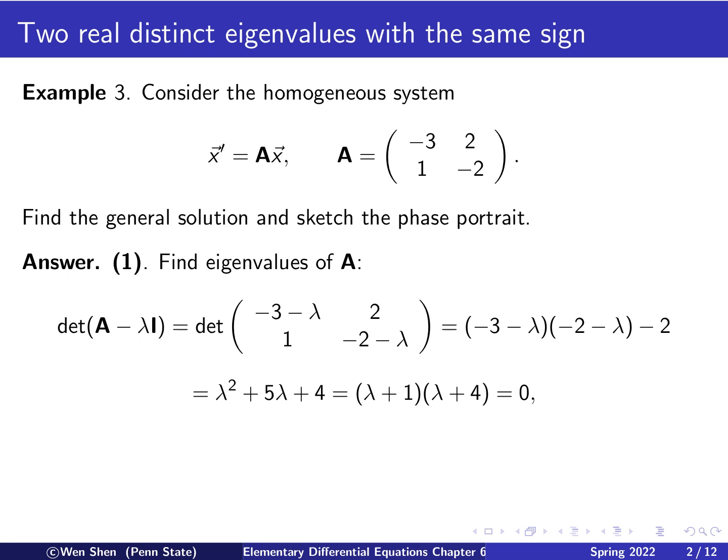The first step is to find the eigenvalues of A. One forms the characteristic polynomial, that is, the determinant of A minus lambda I. I is identity, lambda is the eigenvalue. For the A matrix, subtract lambda on the diagonal. The determinant is the product of the two diagonal entries minus the product of the off-diagonal, which is 2. Opening this up and collecting like terms, we get lambda squared plus 5 lambda plus 4.